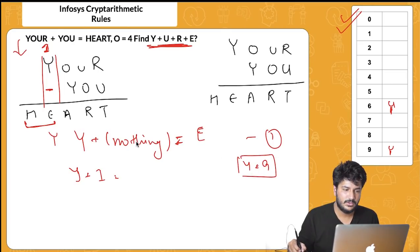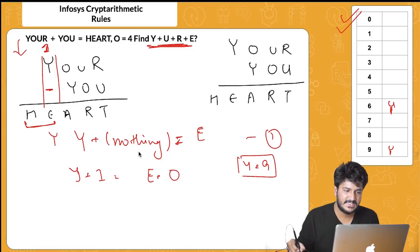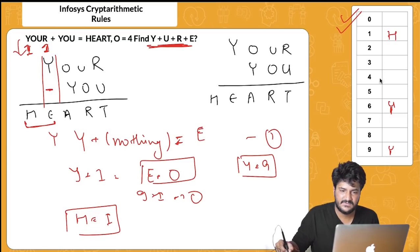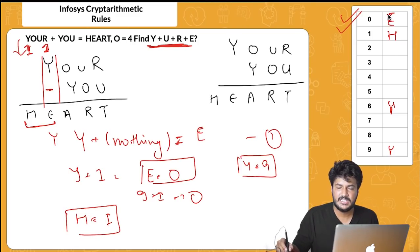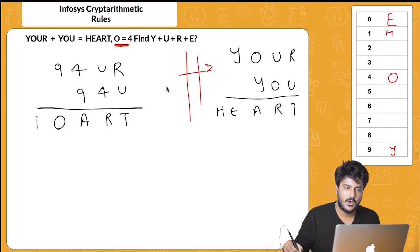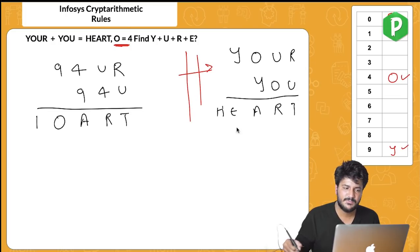With Y=9: 9 plus 1 (carry) equals 10, so E equals 0 and H equals 1. We've found Y=9, E=0, H=1. Now I'll substitute all found values back into the problem: O=4 was given, so the updated equation shows 4, 9, and positions for A, R, T, U.